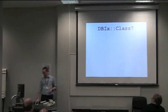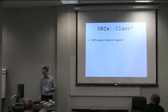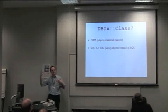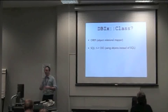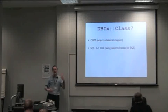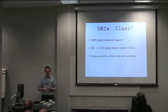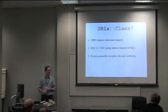But what is DBIC class? It's an object-relational mapper. And what that means is it allows you to convert objects into SQL and SQL back into objects. Even further than that, it means you don't have to write SQL, which is the real piece of it. So it's simple, it's powerful, complex, fabulous, and confusing all at the same time.